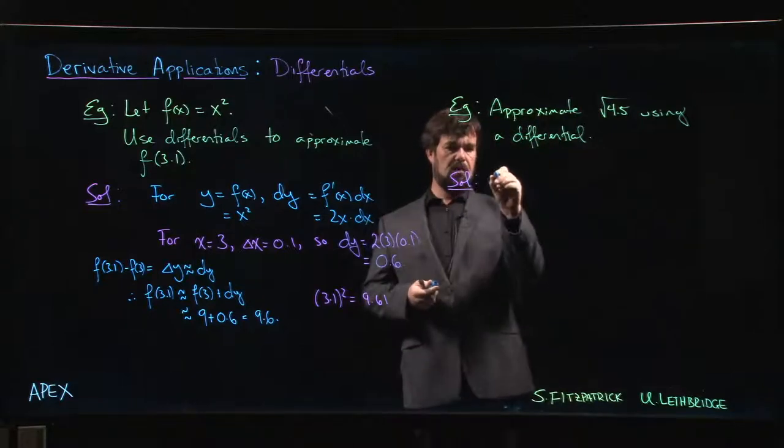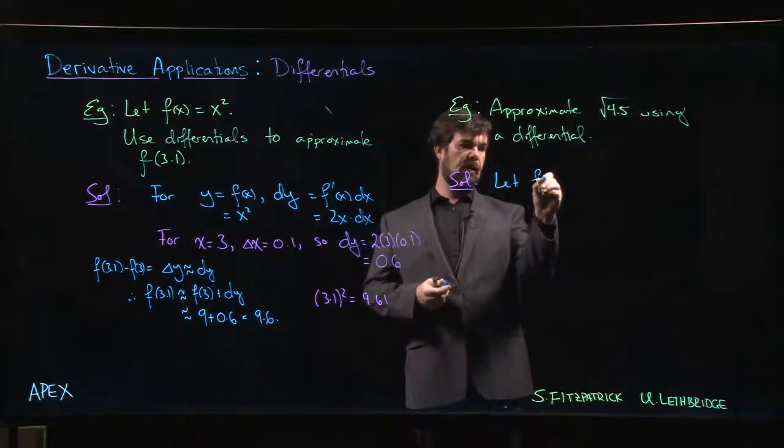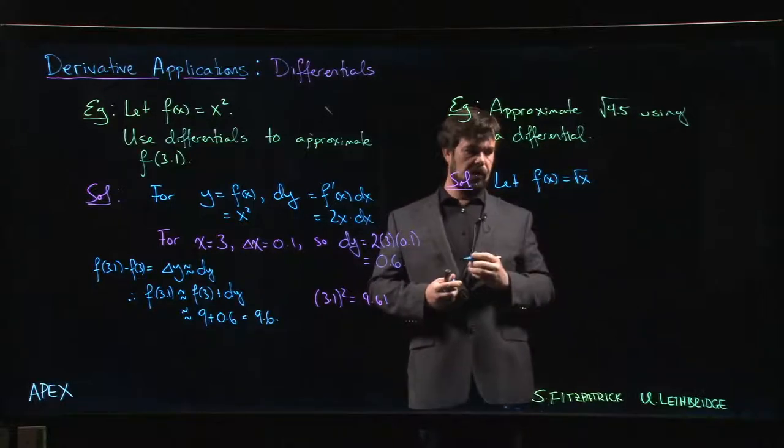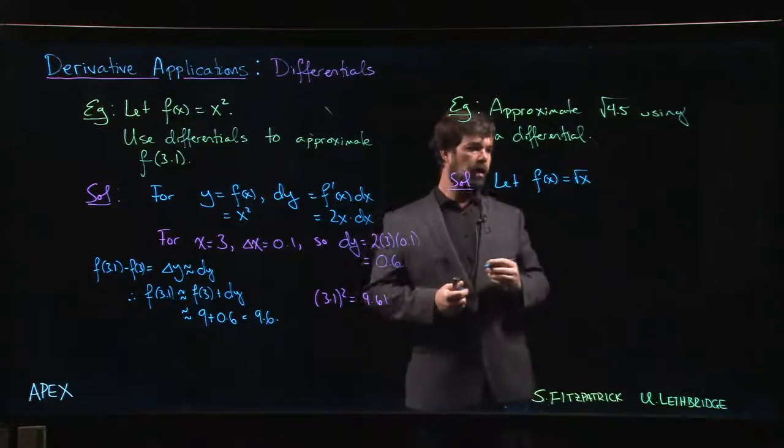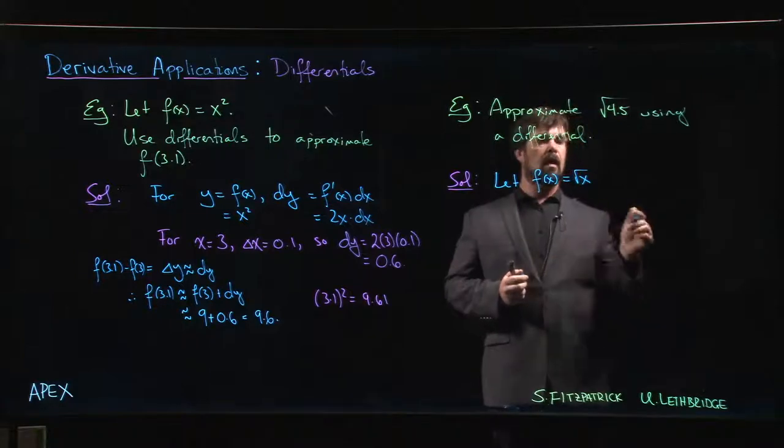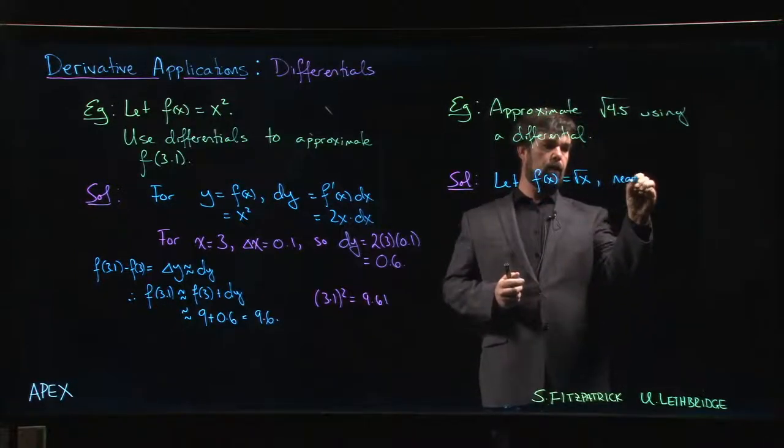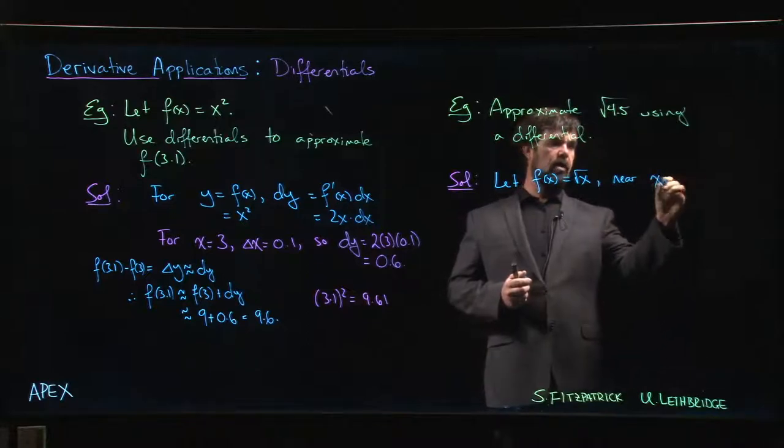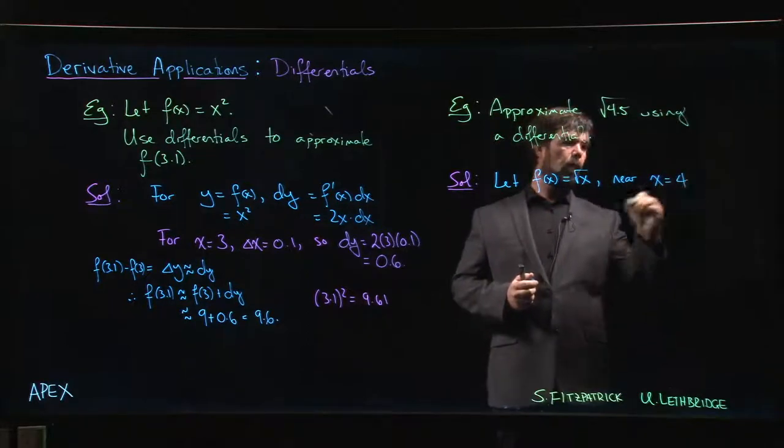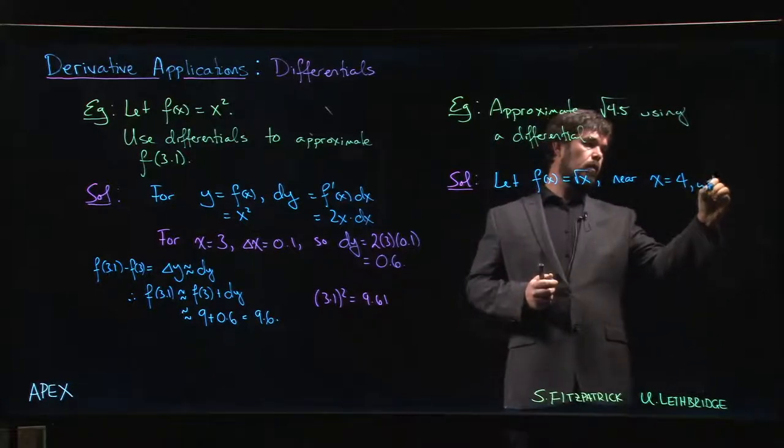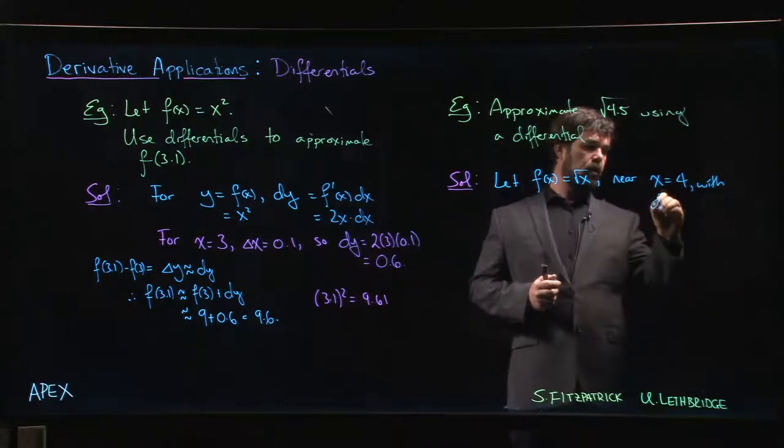So we're going to let f(x) equal the square root of x, and we're going to consider this near the point x equals 4, and we're going to do this with our dx equal to 0.5.